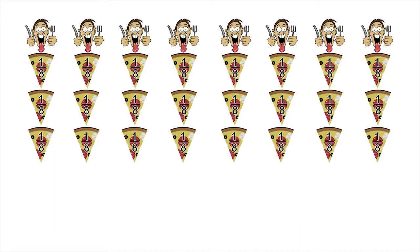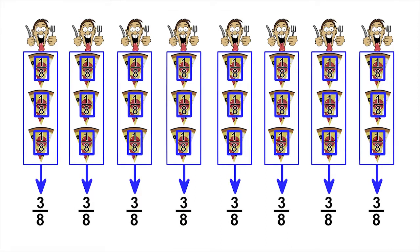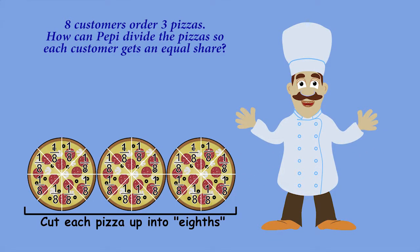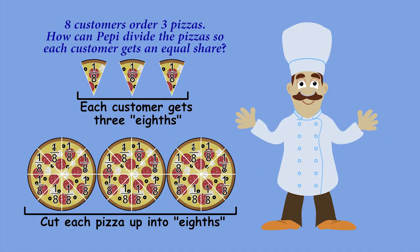Now each customer gets 1 eighth of the first pizza, 1 eighth of the second pizza, and 1 eighth of the third pizza, which adds up to a total of 3 eighths for each person. So I cut each pizza up into eighths and give each customer 3 eighths. Thank you so much for helping Peppy!